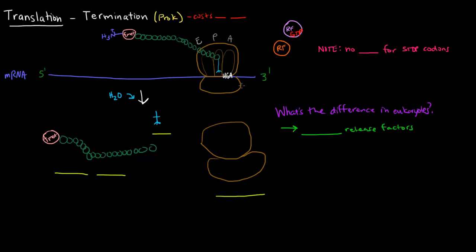And how will it end? Once it reaches a stop codon. So this here, UGA, is a stop codon. So once a stop codon is reached, there is no tRNA for stop codons.